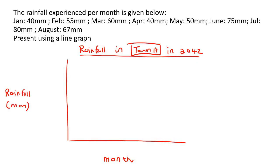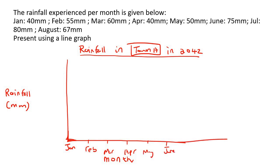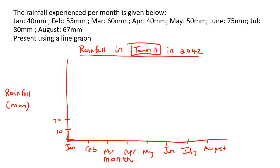Some teachers like to leave a gap and then start with January there, but other teachers start right at the origin — just see what your teacher does. I'm going to start it right there. So we'll have January, February, March, April, May, June, July, and August. For the rainfall, the lowest is 40 and the highest is 80, so we could go up in 10s: 10, 20, 30, 40, 50, 60, 70, and 80.